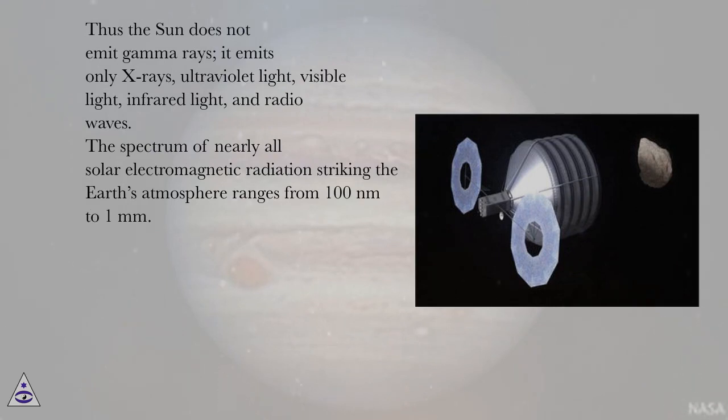Thus the sun does not emit gamma rays. It emits only x-rays, ultraviolet light, visible light, infrared light, and radio waves.